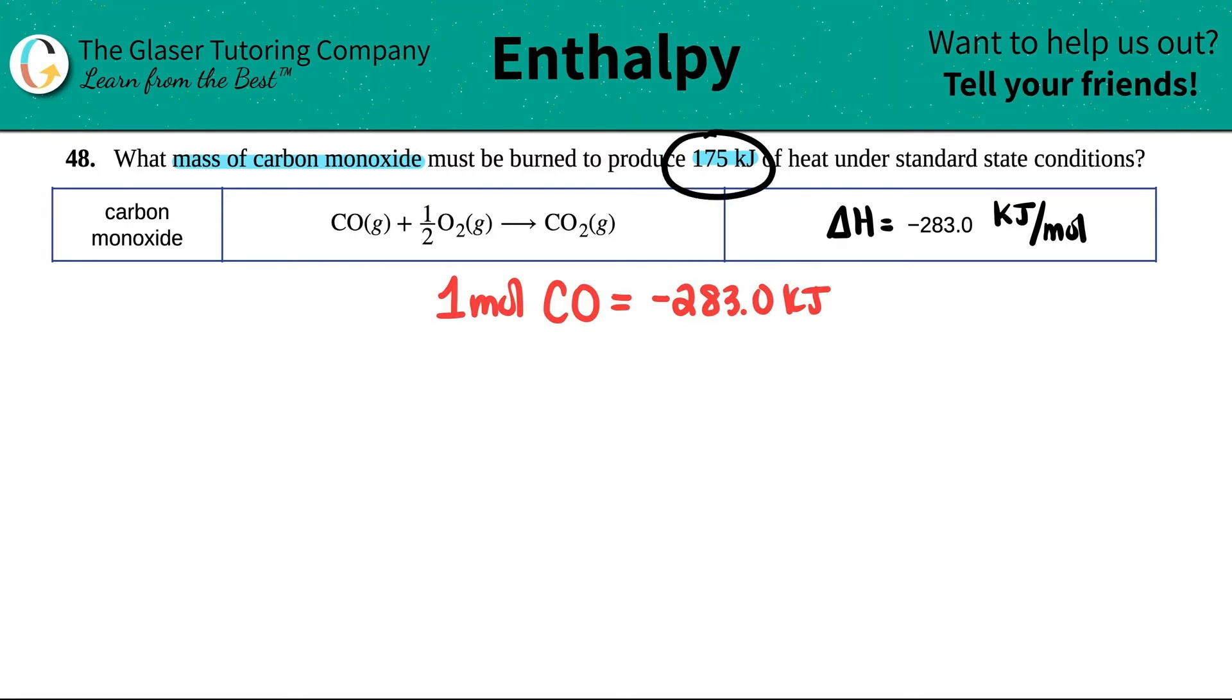So always start with what you're given. I got 175 kilojoules. And now how am I going to get out of kilojoules? Well, I have this little ratio here. I have a relationship between kilojoules and moles. So that's my first step.